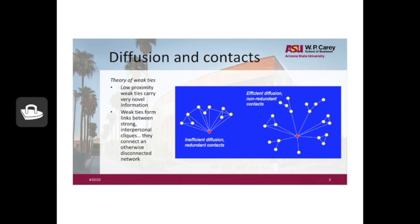On the network on the right, the individual represented by the red dot is connected to many otherwise disconnected groups. This is the type of network where we would expect there to be a broader diffusion of ideas across these cliques that have connections at a distance.